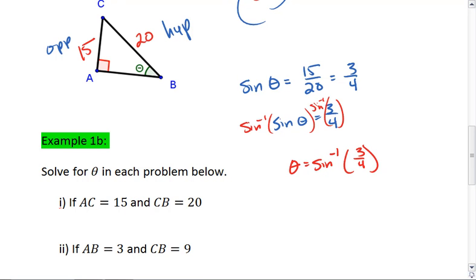So if you go to your calculators, hit the second or the shift button, find your sine button, hit that, and that should actually bring up sine inverse. And then you can type in 3 fourths. We find that theta is 48.59 degrees.